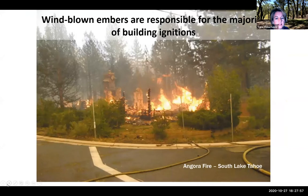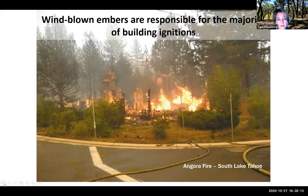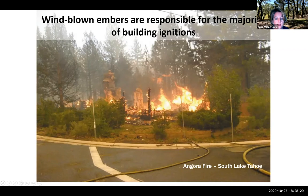Embers find those weak spots, and that means embers are often responsible for the majority of home ignitions. In this case from the Angora Fire, it looks like an alien came in and just zapped that house because none of the vegetation was involved — but really it was embers that penetrated the home, either by the ventilation system or by landing on vegetation right next to the home, creating an exposure and direct flame contact to the home. Becoming ember-aware is what we'll talk a lot about in this webinar series.